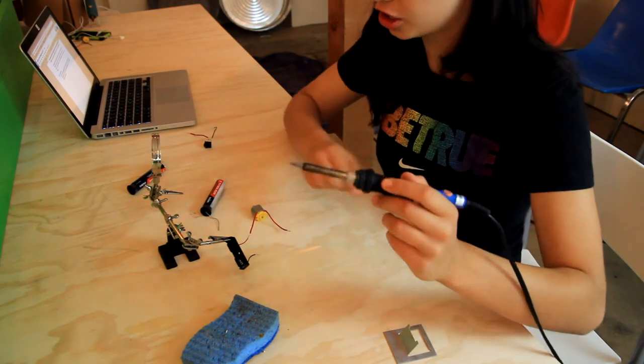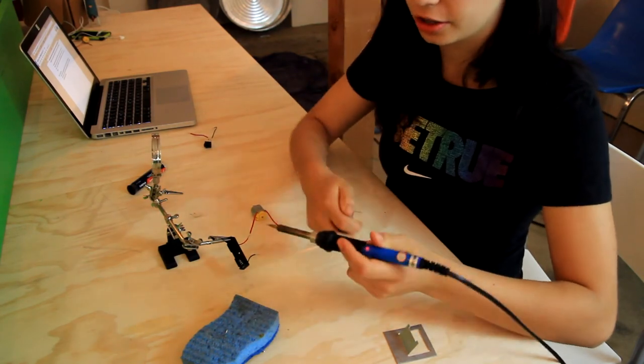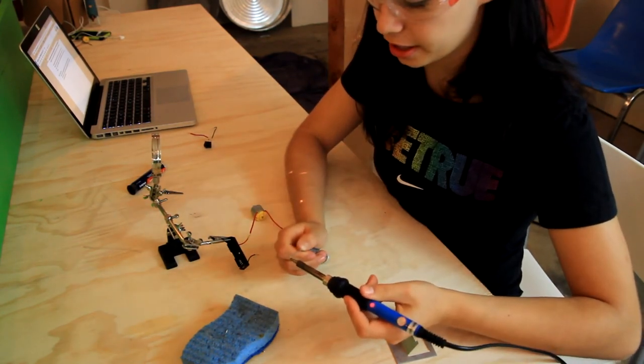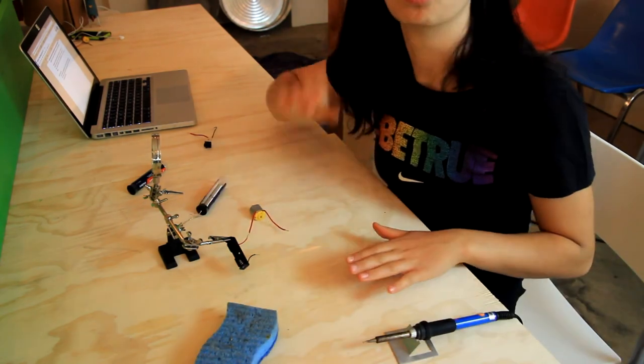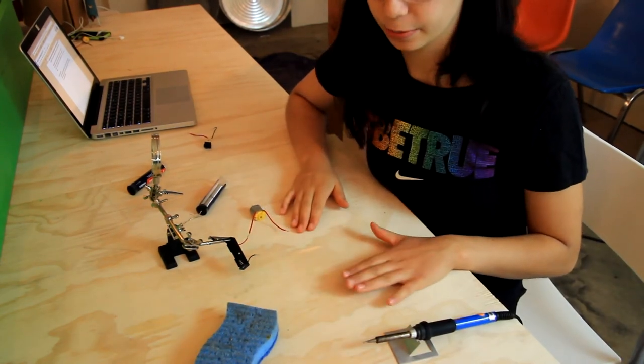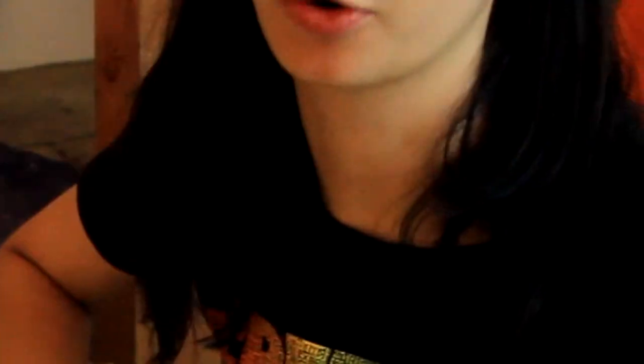Okay and then when you're finished soldering tin your iron once more just to help preserve the tip. Wipe off any excess solder and put her away. It's really really important that the soldering iron is clean when you put it away so that the tip don't get crisp.